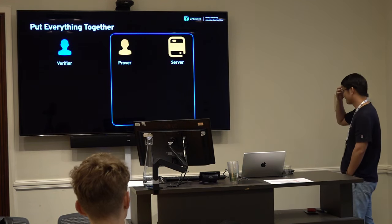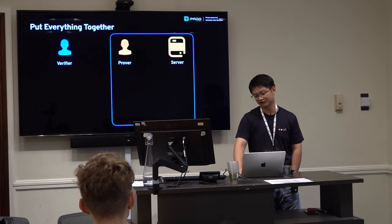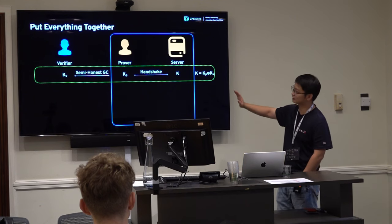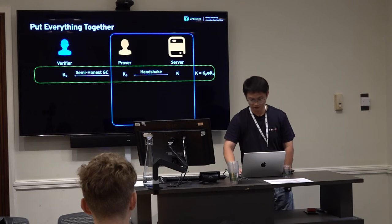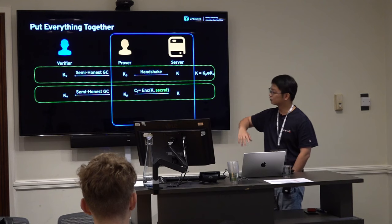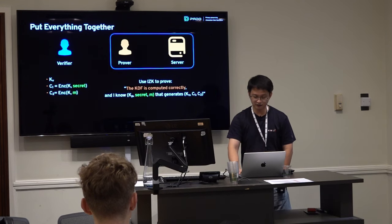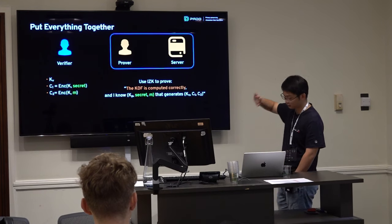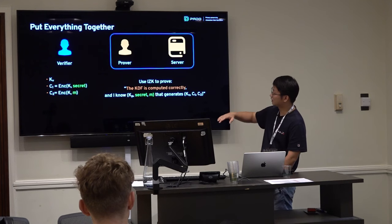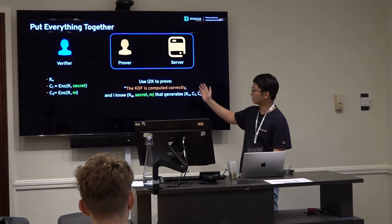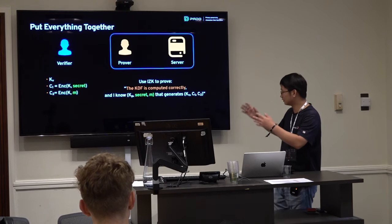Back to our protocol. Using our new approach, we run a two-party computation handshake using semi-honest garbled circuits — 10x faster than malicious GC. The structure is similar to DECO, but at the proving stage we use IZK instead of SNARKs, because IZK is very compatible with these garbled circuits and handles them much faster. Specifically, IZK proves that the KDF is computed correctly and that the prover knows the witnesses generating the data.